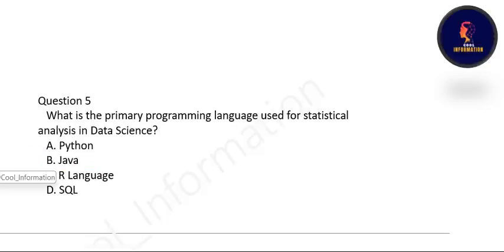Question 4: What is the primary programming language used for statistical analysis in data science? When we talk about statistical analysis in data science, R language is used. Option C is correct.